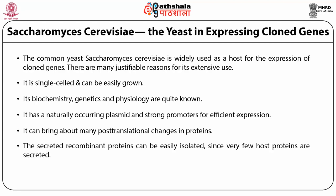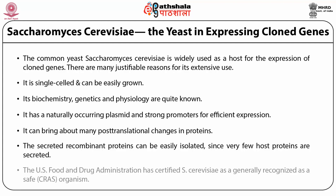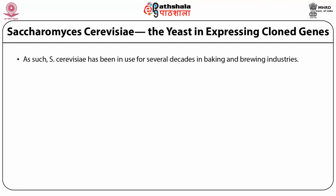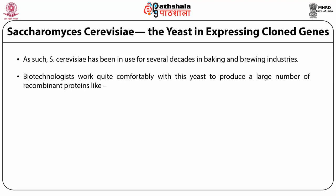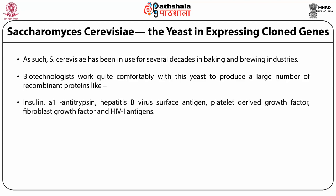The secreted recombinant proteins can be easily isolated since very few host proteins are secreted. The US Food and Drug Administration has certified Saccharomyces cerevisiae as generally recognized as a safe organism. It has been in use for several decades in baking and brewery industries. Biotechnologists use this yeast to produce recombinant proteins like insulin, A1 antitrypsin, hepatitis B virus surface antigens, platelet-derived bone growth factors, fibroblast growth factors, and HIV-1 antigens.